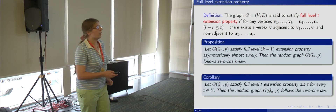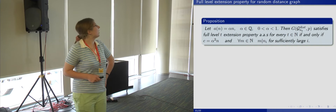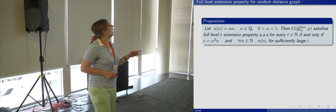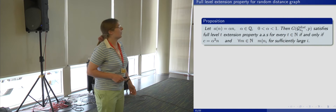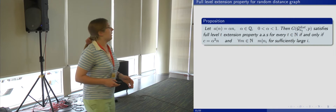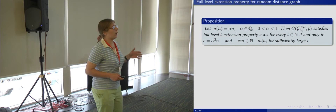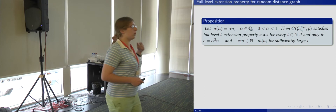Let's formulate a result about the full level extension property for random distance graphs. We suppose that A equals alpha·N and alpha is a rational number from (0,1). Then the random graph G(G_{N_I}, P) satisfies the full level T extension property asymptotically almost surely for every natural number T, if and only if C equals alpha²·N and for any natural number M, N_I is divisible by M for sufficiently large I.